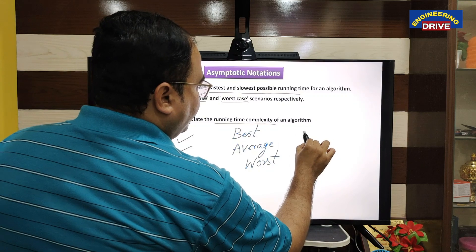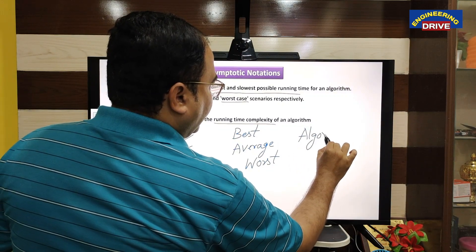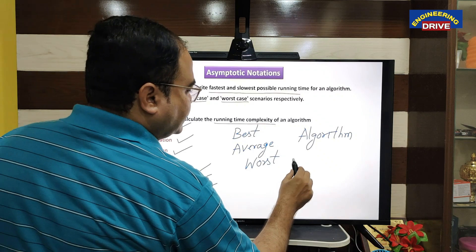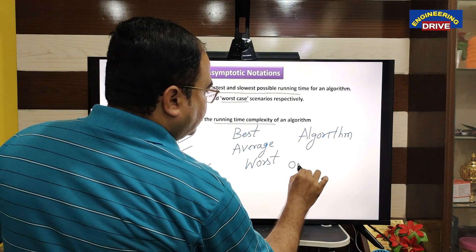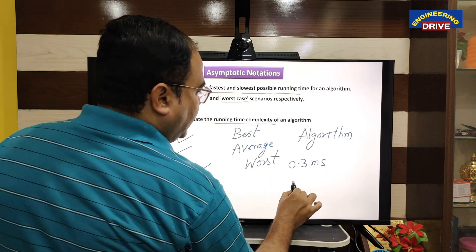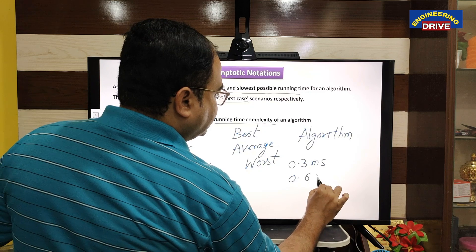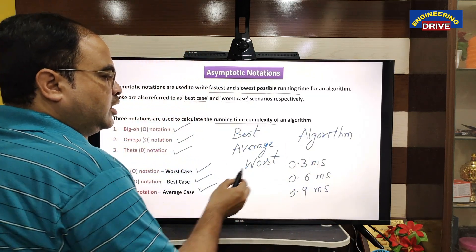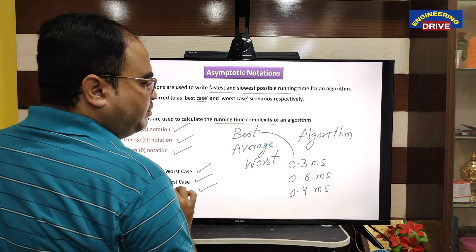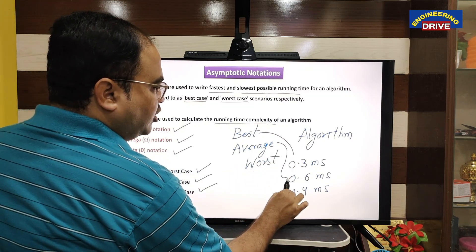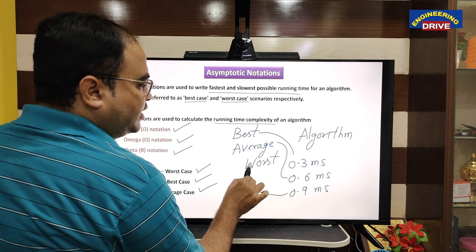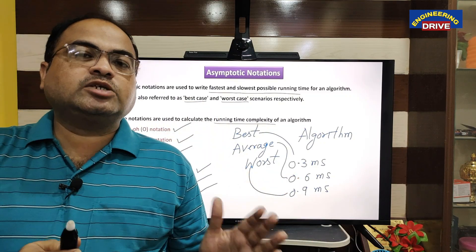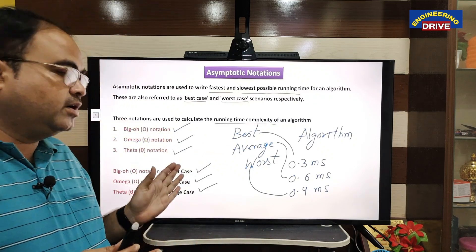For example, let us say one of my algorithms has been executed and it has taken 0.3 milliseconds in one case, 0.6 milliseconds in another case, and 0.9 milliseconds in another case. Now, 0.3 milliseconds I can relate to as the best case, 0.6 milliseconds as the average case, and 0.9 milliseconds as the worst case. To represent these three cases of time complexity, we use asymptotic notations.